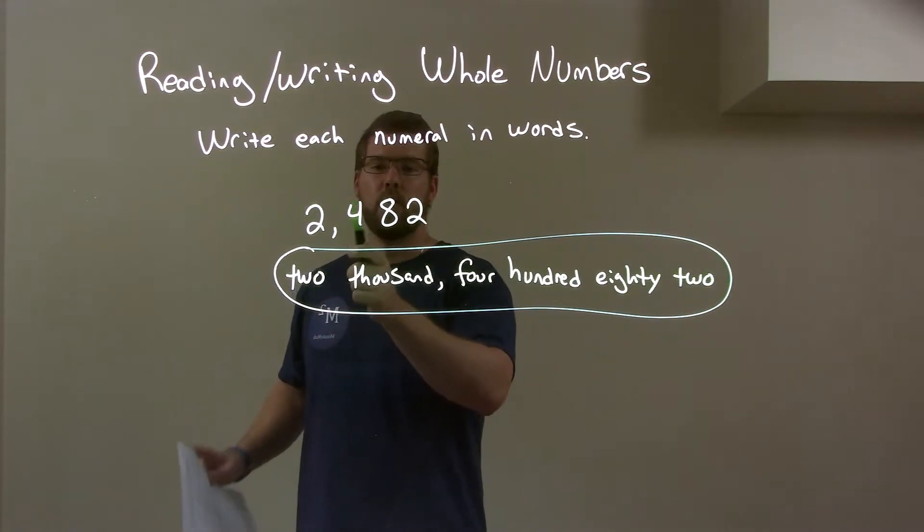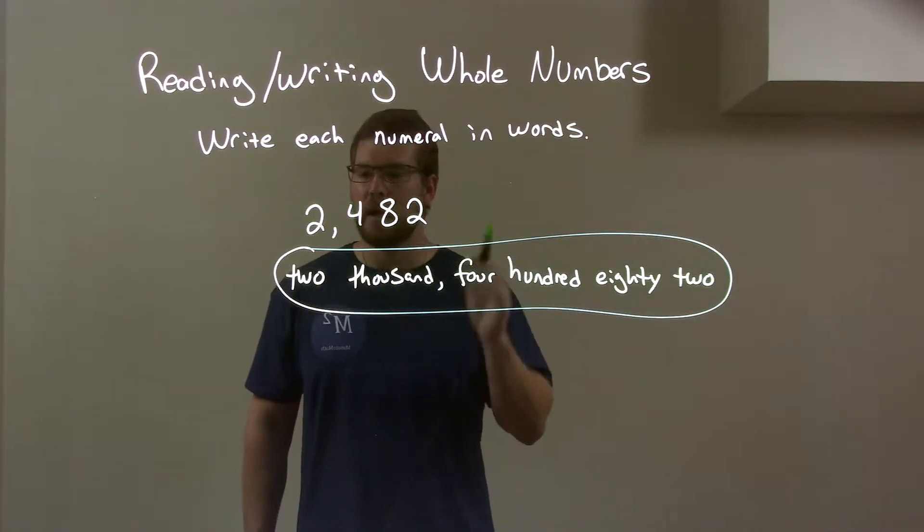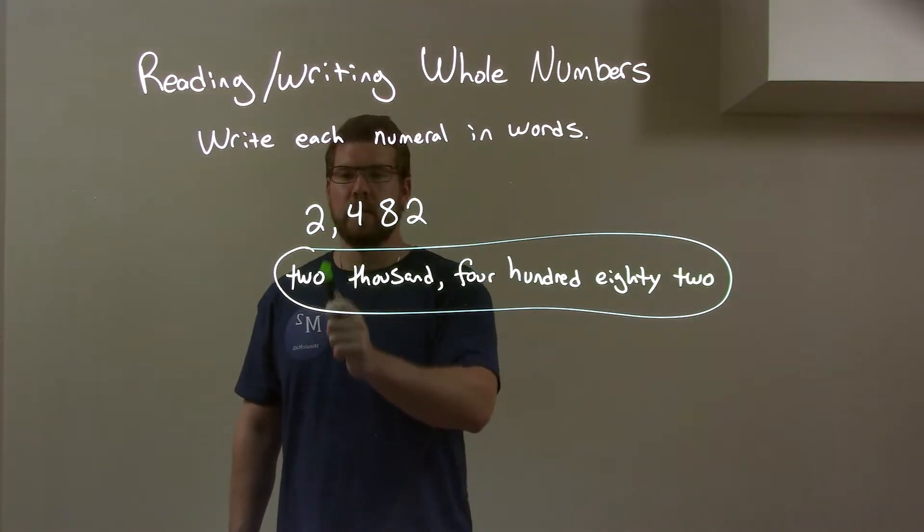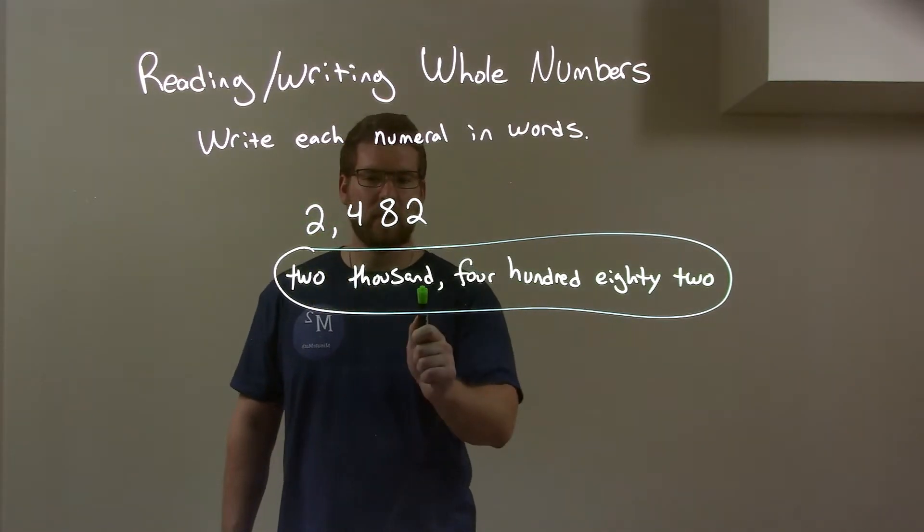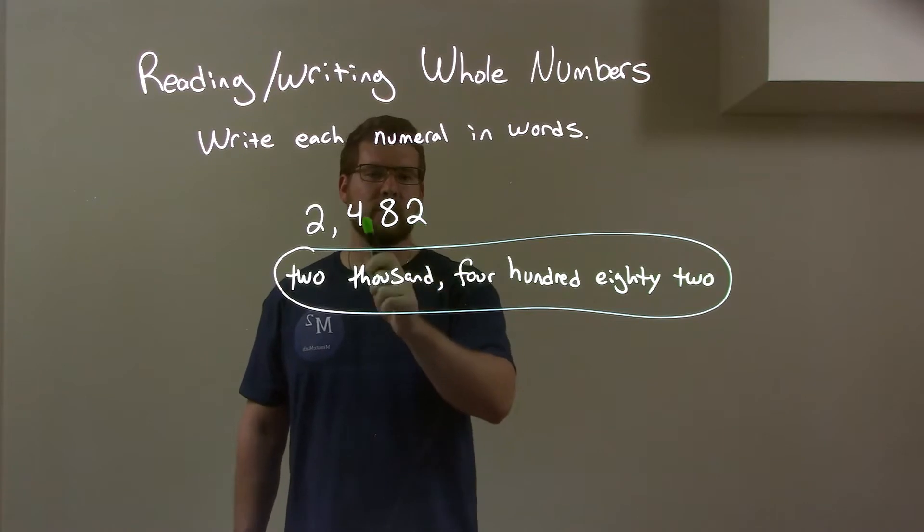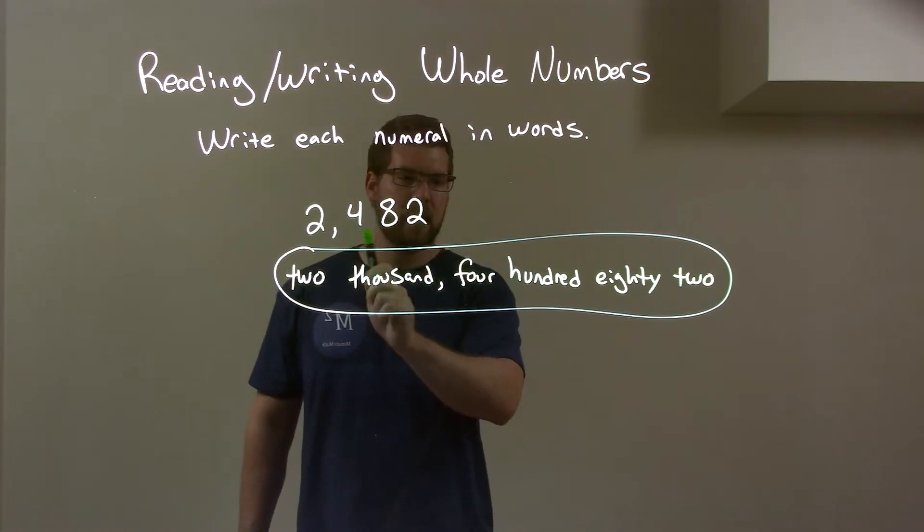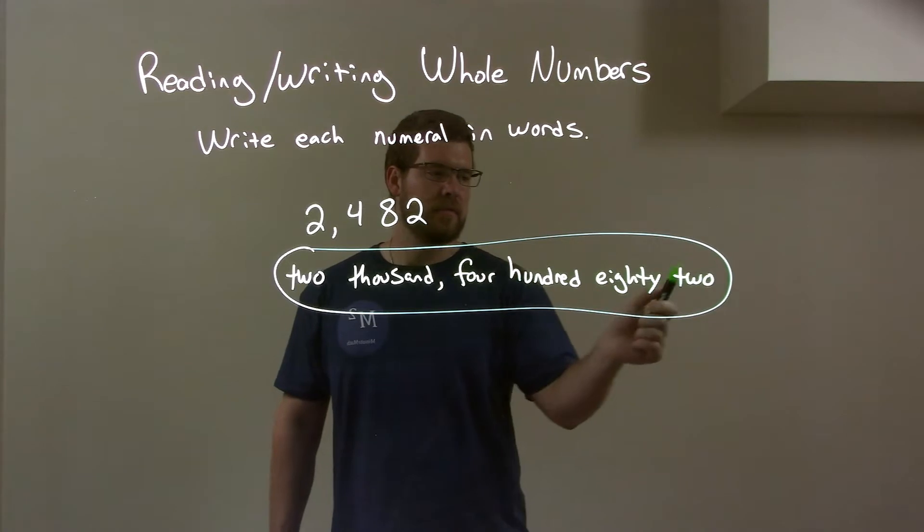We're given 2, 4, 8, 2. And we have to write this in words. Well, 2 is the first part here and that's in the thousands. So we have 2,000. Then the next section is 4, 8, 2. Well, that's 400 right there.